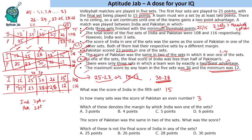Which of these denotes the margin by which India won one of the sets? India's winning margins are 2, 2, and 3 points — so the answer is 3 points. The score of Pakistan was the same in 2 of the sets — that equal score is 28. Which of these is not the final score of India in any of the sets? India has scores of 12, 25, 30, 15, and 28 — India did not score 28 points in any set, so 28 is not India's score in any set. This is the solution to the set.